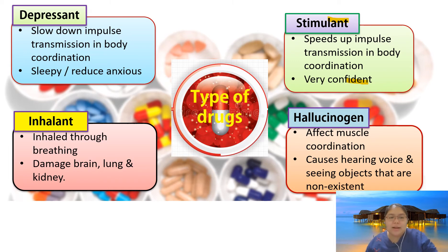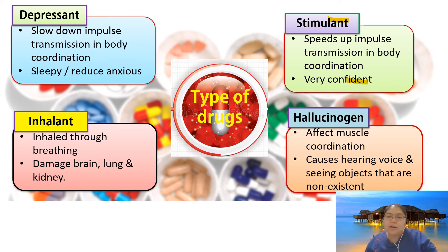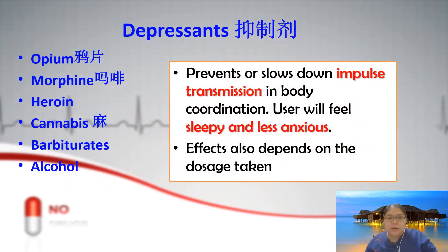The third type is inhalants, which enter the body through breathing. They damage the brain, lungs, and kidneys. The fourth type is hallucinogens, which affect your imagination — you feel like you are imagining things. They affect muscle coordination, cause you to hear voices, and see objects that are non-existent.